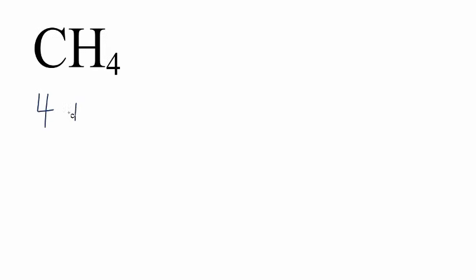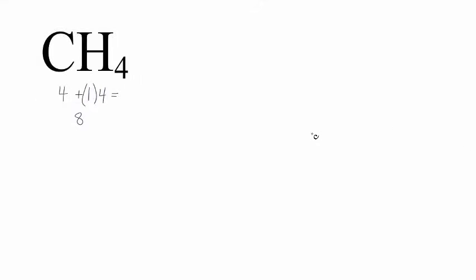For the CH4 Lewis structure, let's find the number of valence electrons. Carbon is in group 14, sometimes called 4A. It has four valence electrons. Hydrogen has one valence electron, but we have four hydrogens, so let's multiply by four. Four plus four equals eight, so we have eight valence electrons for the CH4 Lewis structure. We'll put the carbon in the center — hydrogen atoms always go on the outside — and then we'll put the four hydrogen atoms around it.